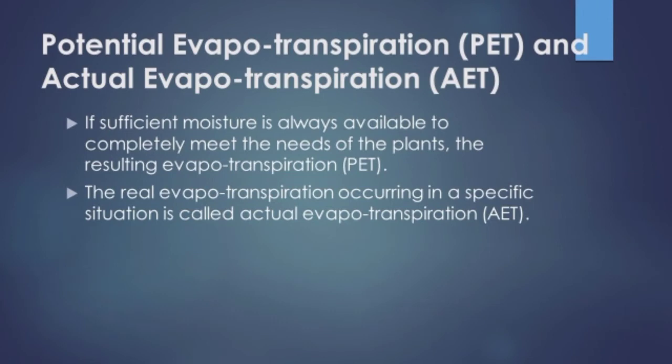Next are potential evapotranspiration (PET) and actual evapotranspiration (AET). PET is the ideal case — the evapotranspiration amount if irrigation fully meets the complete need of plants and soil. AET is the real case — the actual amount of evapotranspiration occurring in practice.